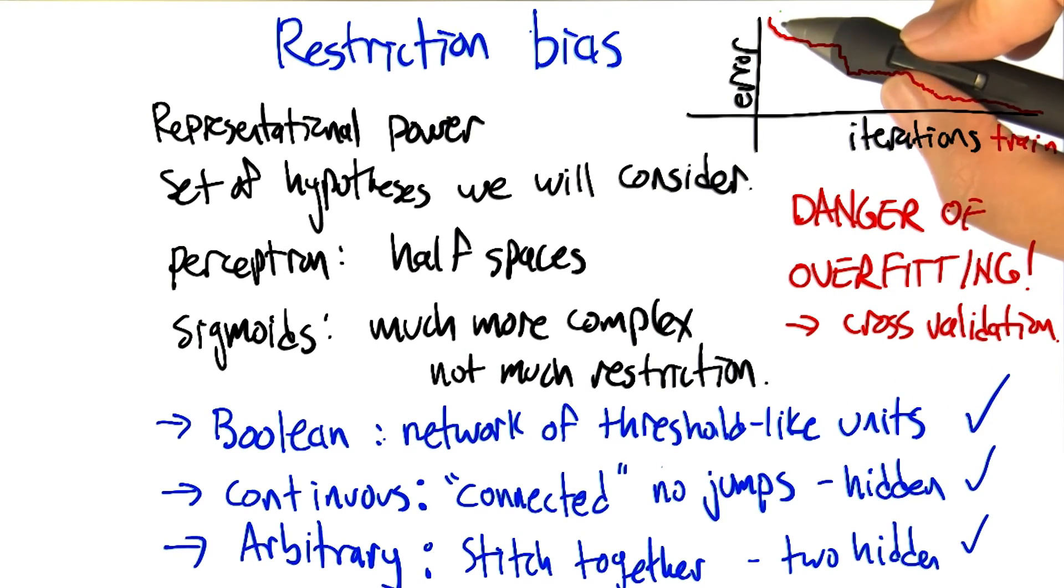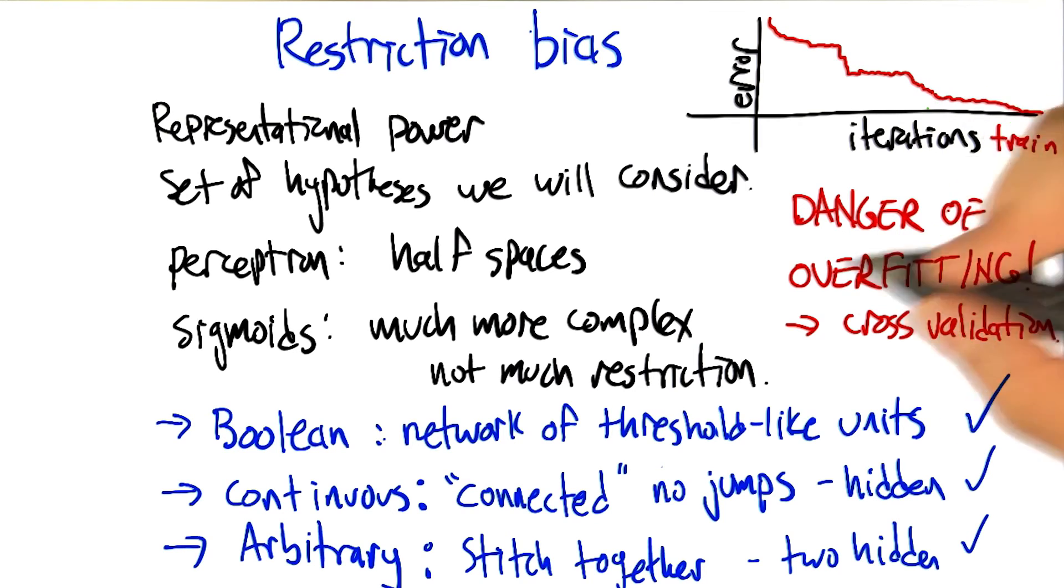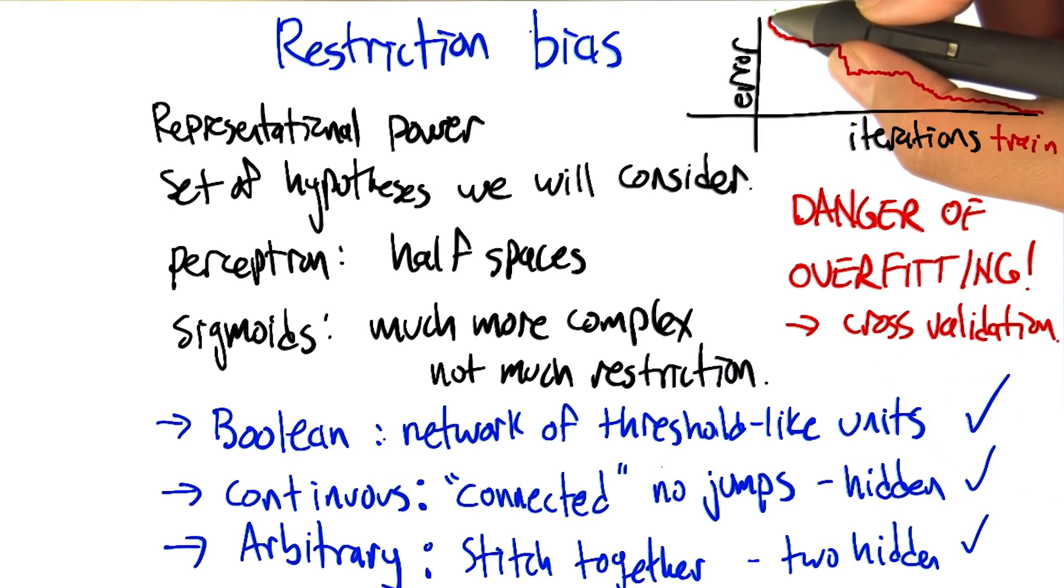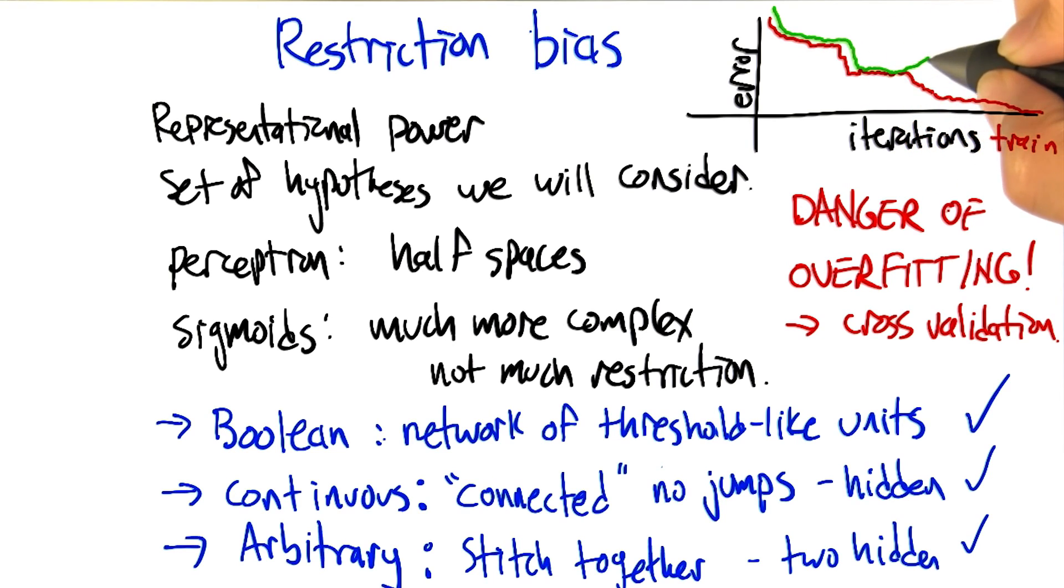So in the standard kind of graph, we get the error on the training set dropping as we increase iterations. It's doing a better and better job of modeling the training data. But in classic style, if you look at the error in some kind of held out test set, or maybe in a cross validation set, you see the error starting out kind of high, maybe dropping along with this. And then at some point, it actually turns around and goes the other way.